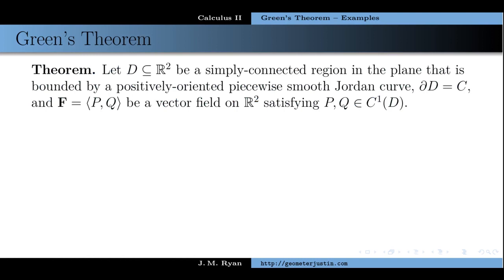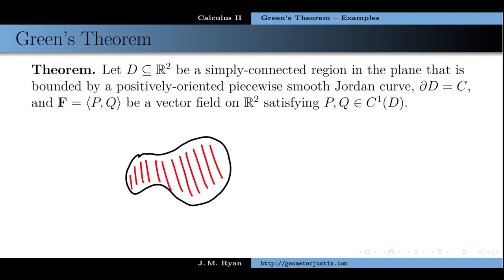Let's begin by remembering what Green's Theorem says. In Green's Theorem, we assume that we have a region in the plane, which is bounded — the region here is the interior of this blob that I've drawn. We'll call this region D, and this region is bounded by a simple closed curve, also known as a Jordan curve. It's piecewise smooth, in the sense that we can parametrize it by smooth functions. And the boundary curve being positively oriented means that as we travel along the curve, the bounded region is to our left.